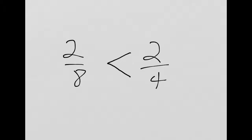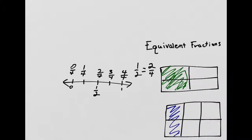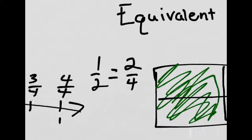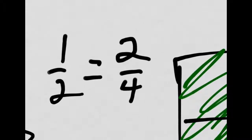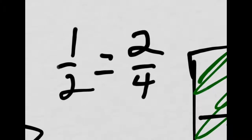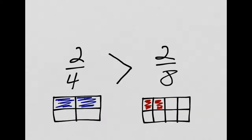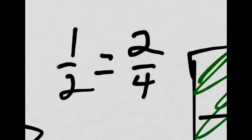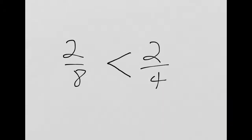What if they were the same? Can you think of a sign that would show that? Well, let's look back at equivalent fractions. Equivalent fractions are numbers that are the same size. One half is equivalent to two fourths — they are equal. We use the equal sign there. So we have three signs: equal, greater than, and less than.